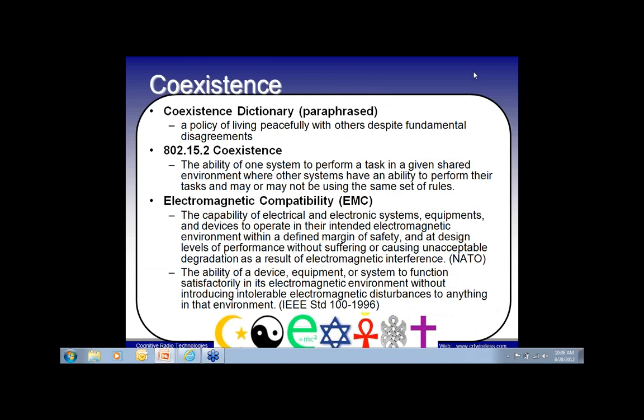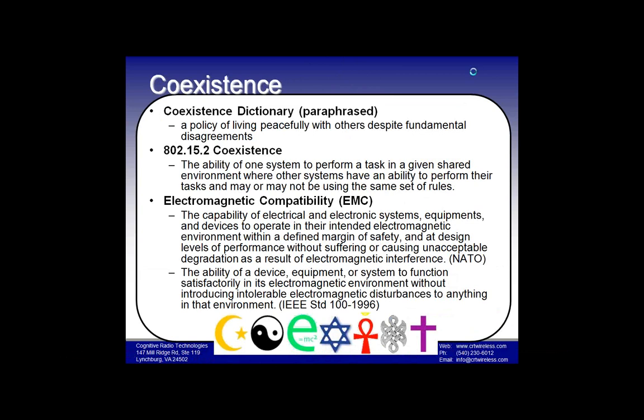One nice thing about TV white space and many cognitive radio deployments is that just satisfying the regulations — being able to geolocate yourself and communicate with the database — provides infrastructure which makes implementing more sophisticated coexistence algorithms much easier. A related term is electromagnetic compatibility (EMC), defined by NATO as the capability of systems to operate in their intended electromagnetic environment within a defined margin of safety without suffering or causing unacceptable degradation due to electromagnetic interference.